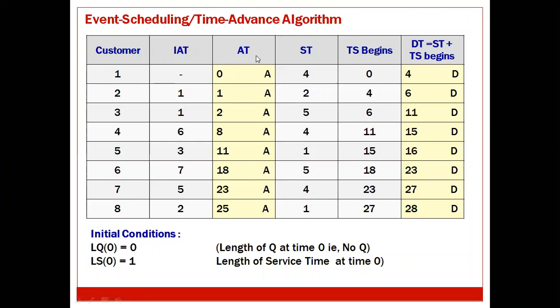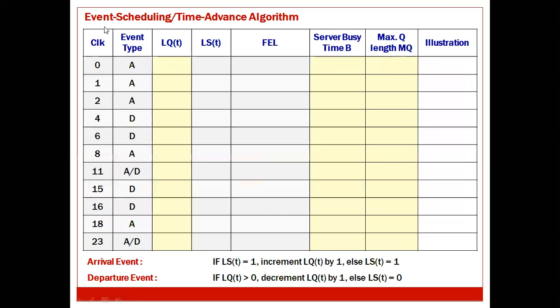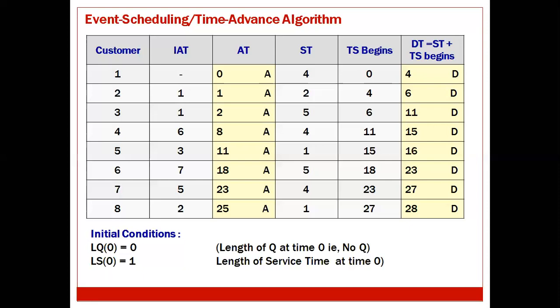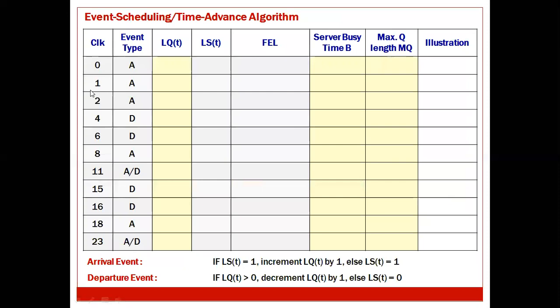Arrival times (A) are 0, 1, 2, 8, 11, 18, 23, 25 and departure times (D) are 4, 6, 11, 15, 16, 23, 27, 28 — these are all clock times. We take the arrival and departure times, sort them in ascending order, and put them in the simulation table. We stop at clock 23 because the stopping time is 23, so we don't write 25, 27, or 28. For 11 and 23, both arrive and depart at the same clock, so we write both A and D.